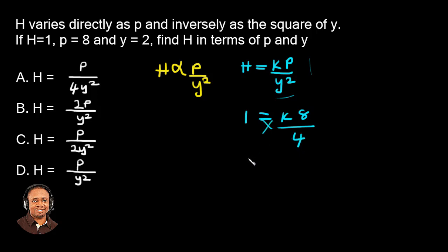So if we cross multiply now, we have 8k equals 4 times 1, which is 4. So we'll divide both sides of the equation by 8. We have k equals 1 over 2.